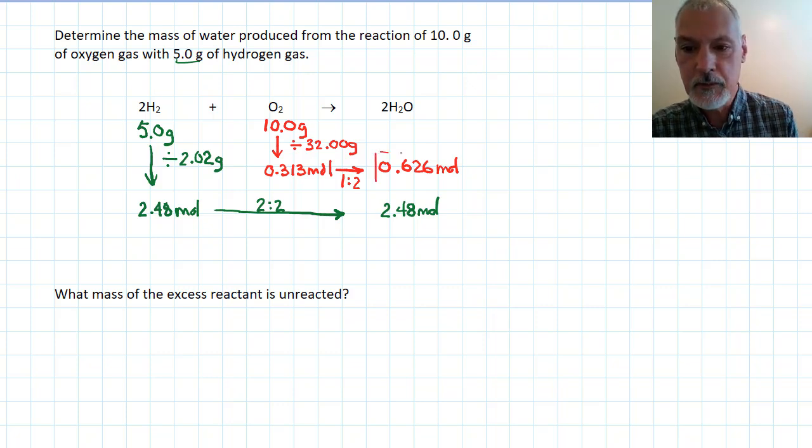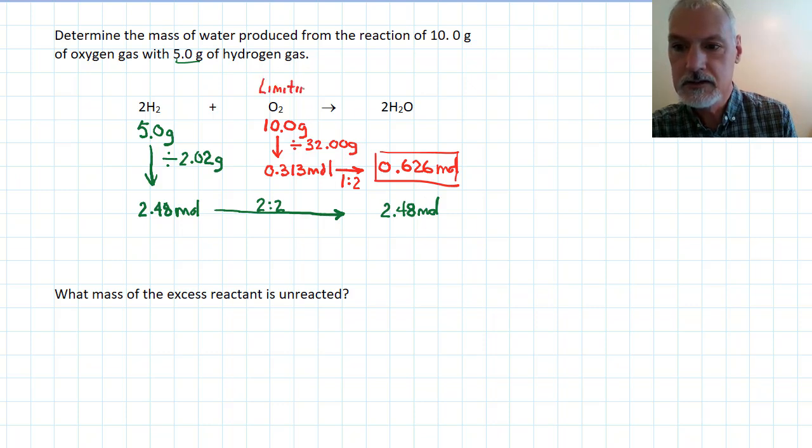This is the smaller of my amounts. That allows me then to say that this is my limiting chemical and the hydrogen, my excess chemical.